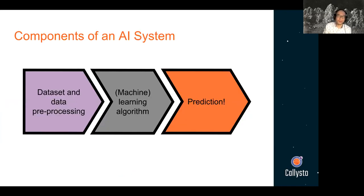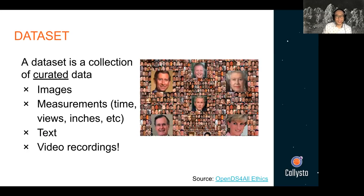If we wanted to dive in a little bit more — what are the components of an AI system? The three main components are: first, you have to have data. A dataset is a collection of curated data — that word 'curated' is really important. It includes images, measurements, text, video recordings — pretty much anything can be turned into a digital format and used as data these days. That data can be used to train an AI system. Then you need some type of learning algorithm, typically a machine learning algorithm, and the output of the AI system is some type of prediction.